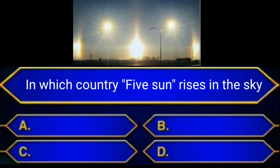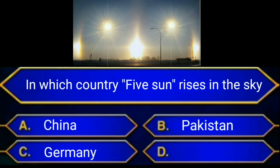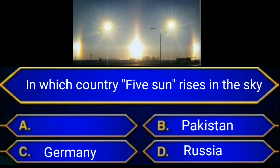In which country do 5 suns rise in the sky? A. China, B. Pakistan, C. Germany, D. Russia. Answer is option A: China. Five suns shining in the sky is a phenomenon seen in China's Inner Mongolia. This is also called a sun dog or mock sun. The scientific explanation is that it is an elaborate optical illusion that requires temperatures of minus 20 degrees.